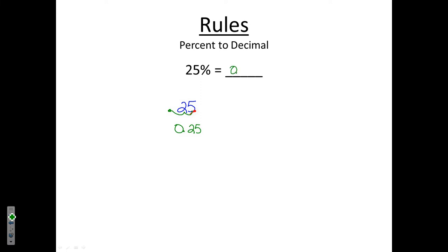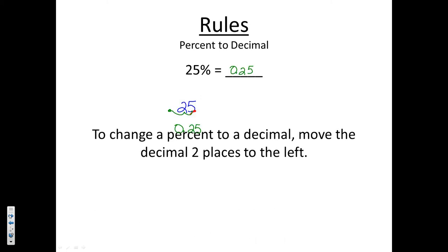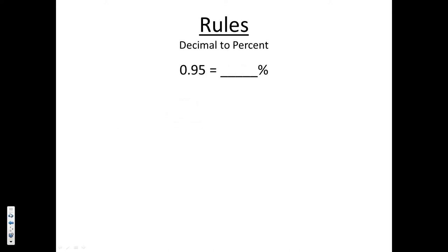So 25% becomes 0.25. To change a percent to a decimal, you move the decimal two places to the left.